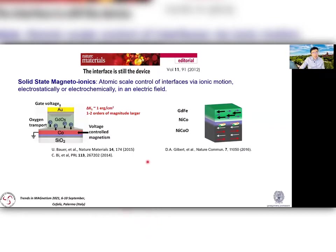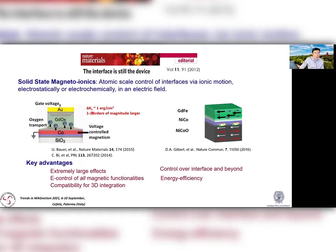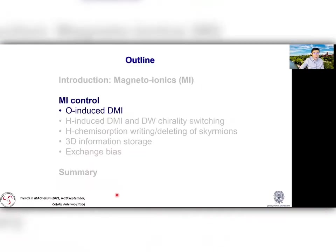In earlier studies by Jeff Beecher's group and Wei-Gang Wang and Suzanne Tervelte's groups, they showed that in gallium oxide/cobalt systems, oxygen ion migration can trigger the toggling of cobalt perpendicular magnetic anisotropy, with an effect size one to two orders of magnitude larger than prior studies. The electrochemical means further enables magneto-ionic control over interfaces and beyond. In essence, magneto-ionics allows one to control all magnetic functionalities with the electric field, and they are intrinsically energy efficient and compatible for 3D integration. I will illustrate examples mainly on using chemisorption to induce DMI and control spin textures.